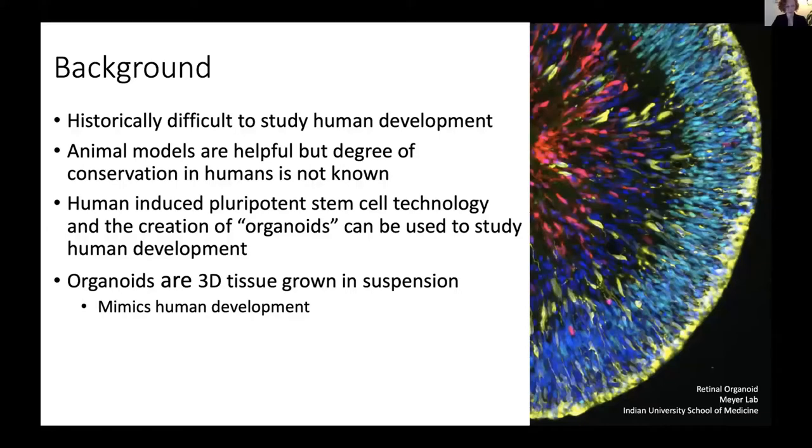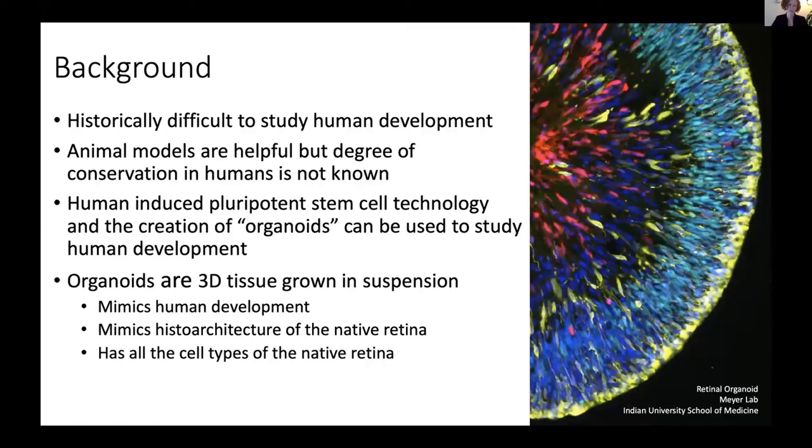For my research, I used retinal organoids to study developmental human retina. The retina is a very complex laminated structure that needs an incredibly specific architecture to be functional. Retinal organoids have been shown to self-assemble into the correct laminar structure and produce all seven functional cell types of the retina by following human in vivo developmental pathways.